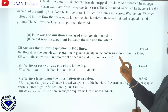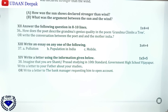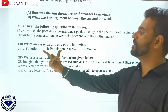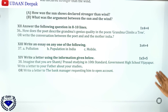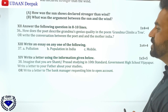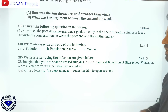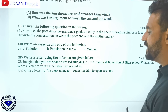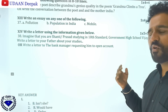Then question number 36 carries four marks. The essay topics are very important: Pollution, Population in India, and Mobile phones. Then letter writing for five marks — imagine you are Shanti or Prasad, studying in 10th standard at Government High School, Vijayapur. Write an informal letter to your father about your studies. Also write a formal letter to the bank manager requesting to open an account.